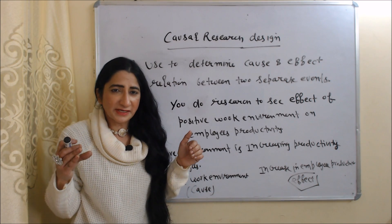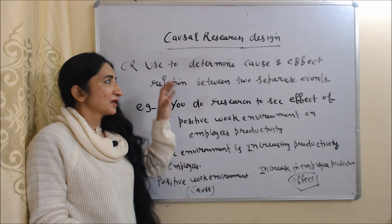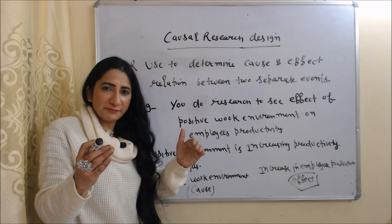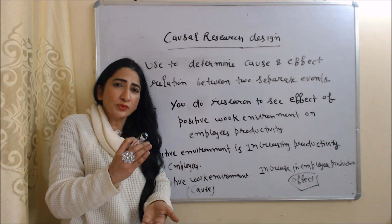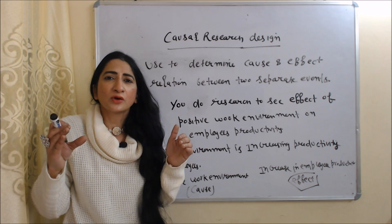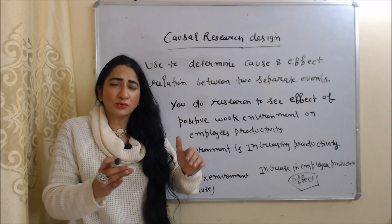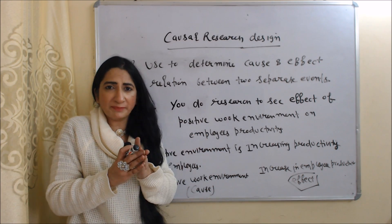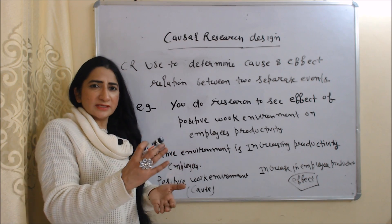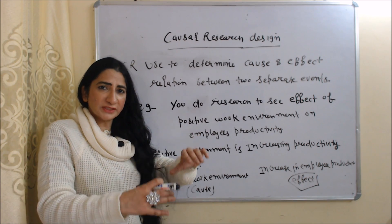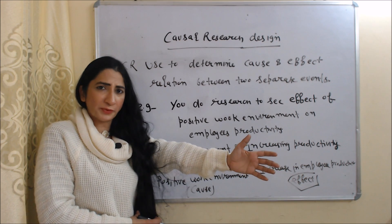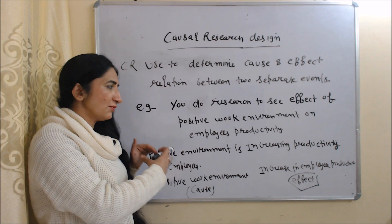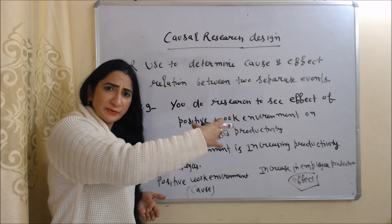The next research design is causal research design. Causal research design is used to determine the cause and effect relationship between two separate events. For example, you do research to see the effect of a positive work environment on employees' productivity, and during your research you find that a positive work environment is increasing employees' productivity.